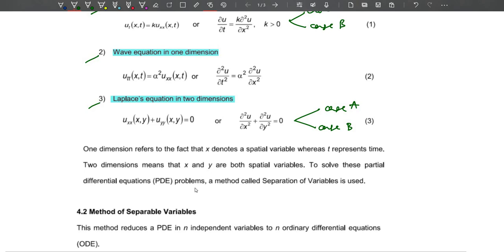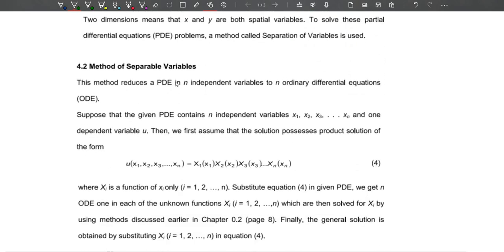The method of separable variables says that suppose the given PDE contains n independent variables, let's say x_1 until x_n, and one dependent variable, which is u.